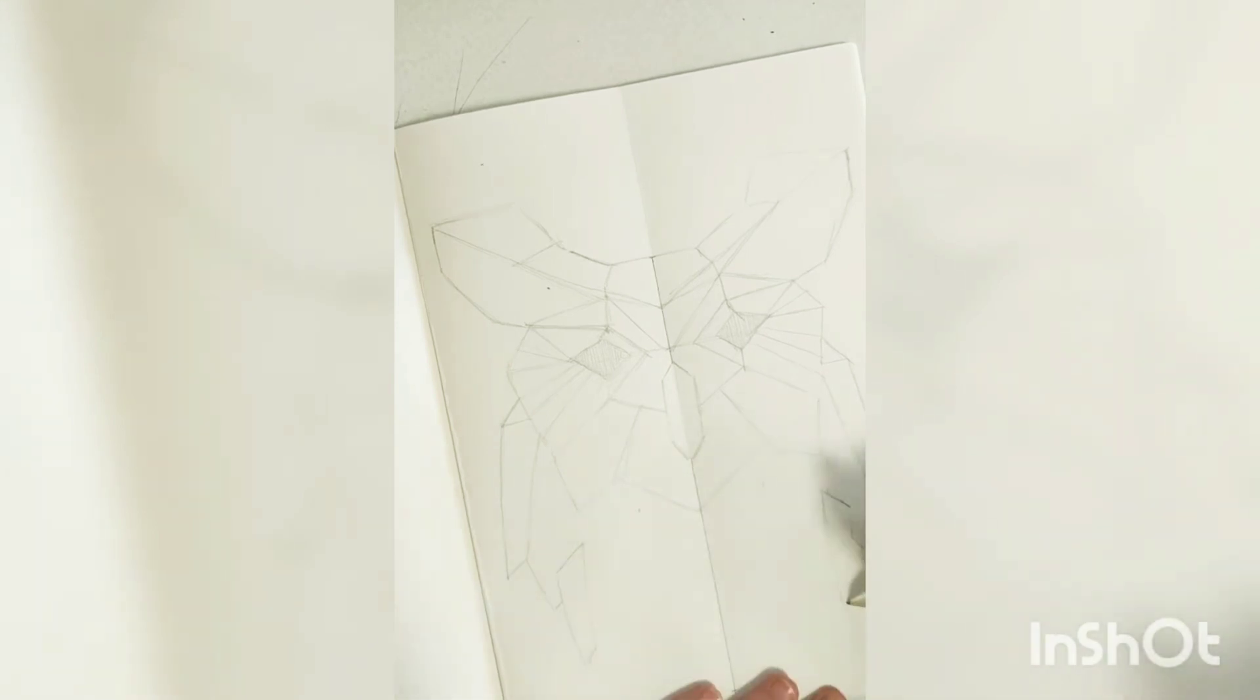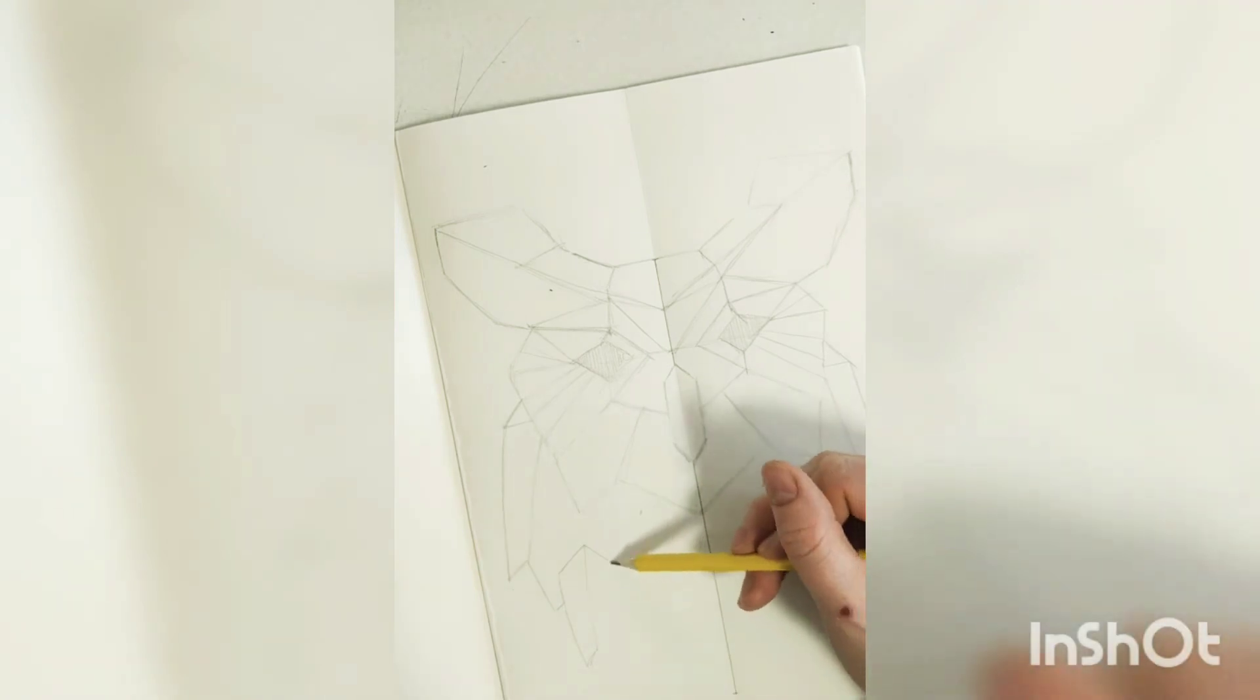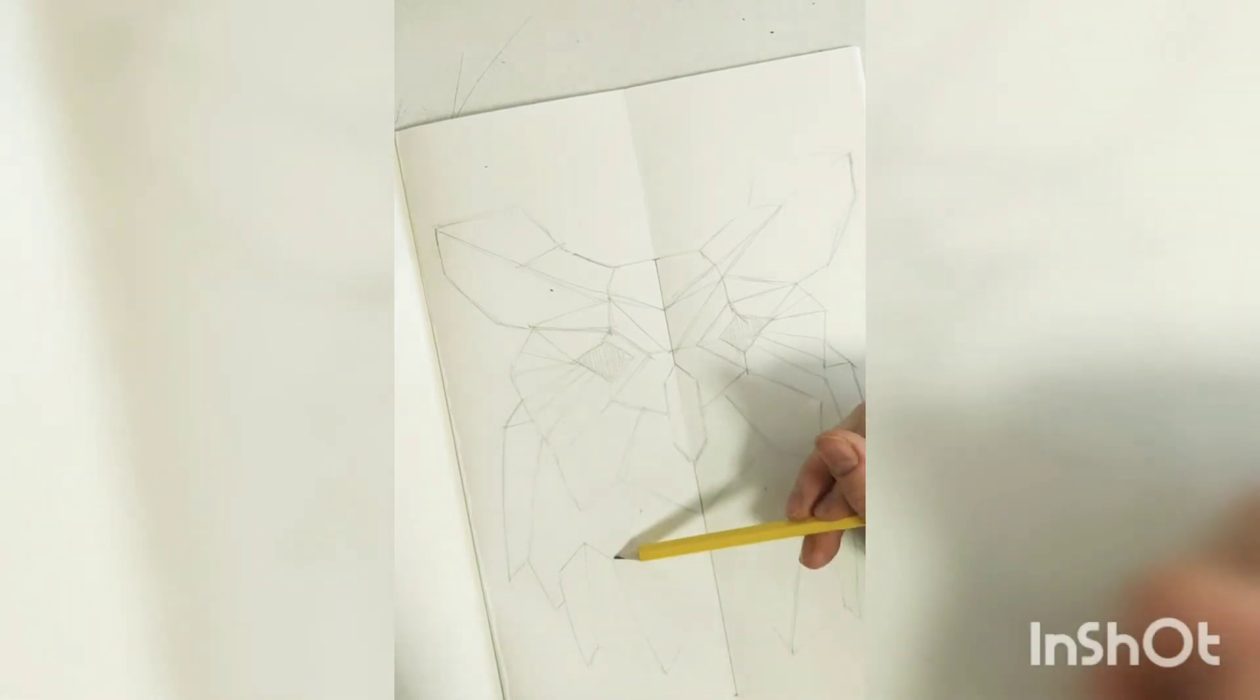And I keep having to kind of check, check what I'm doing and check that I'm doing it right. But I'm constantly moving from side to side. So having the line in the middle really helped me work out where things needed to be because it is symmetrical.